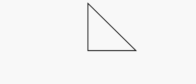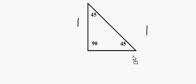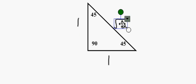Let's say it's a 45-45-90 degree triangle. You got a 1 to the 1 to the Radical 2. Break it down — 1 to the 1 to the Radical 2.